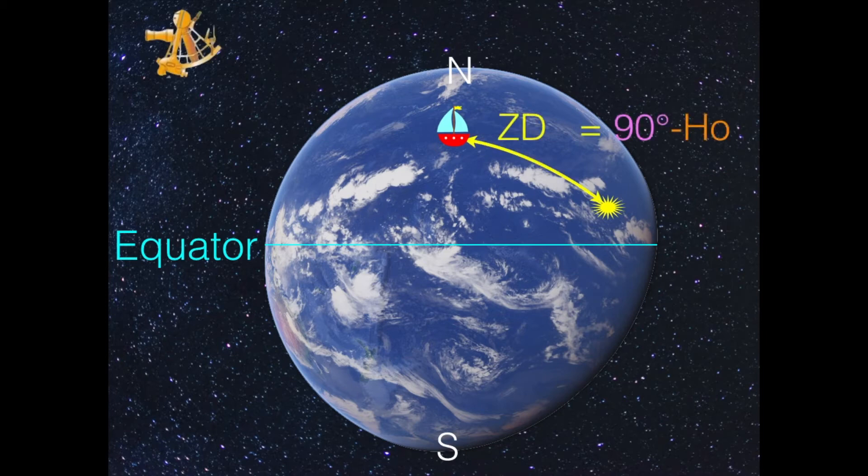So when we shoot it with our Hs, read off the sextant, then you correct it to get the HO, the observed altitude. And all you do is, if you want to know the distance between you and the sun, you take 90 degrees minus the true observed altitude.